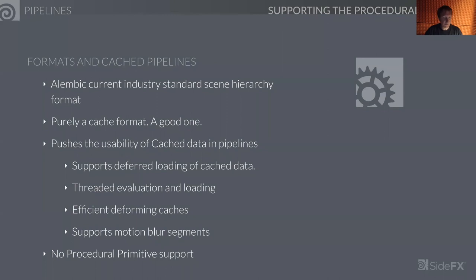Your first reaction is that pipelines are data centric. At Side Effects, when we looked at how to represent data, we saw many pipelines fixed on cache formats. The Alembic format has worked fairly well as a pure cache format. It pushes the usability of cache data in pipelines as far as possible. It supports deferred loading of cache data — you only pull data off disk when you need it. Loading and unloading is threaded, giving you threaded evaluation. It efficiently supports deforming caches and motion blur segments.